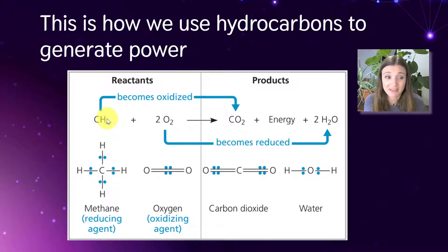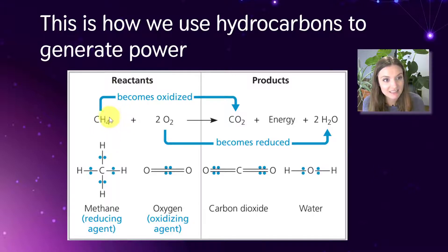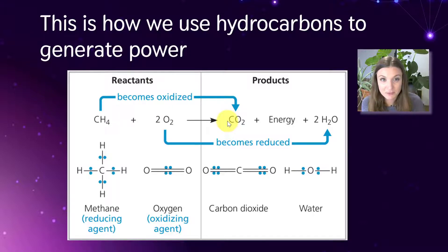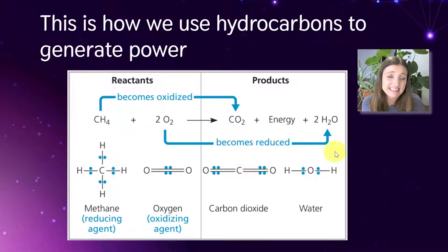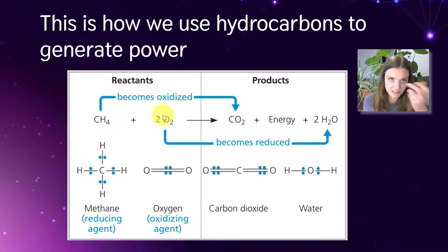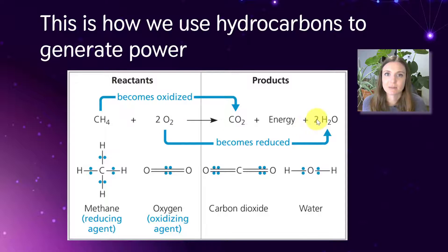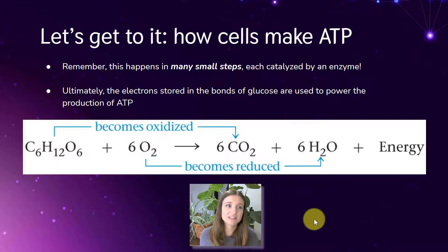We're going to take electrons off of methane — a component of natural gas — and pass those electrons to oxygen. So methane will be oxidized into carbon dioxide. We take electrons off of it, so it loses some energy. We pass those electrons to oxygen, and when oxygen gains extra electrons, it becomes water basically. Those oxygen atoms become negatively charged when they gain electrons, because electrons have a negative charge, so oxygen grabs some positive hydrogen floating around. We burn something, we oxidize it, and then oxygen is reduced.